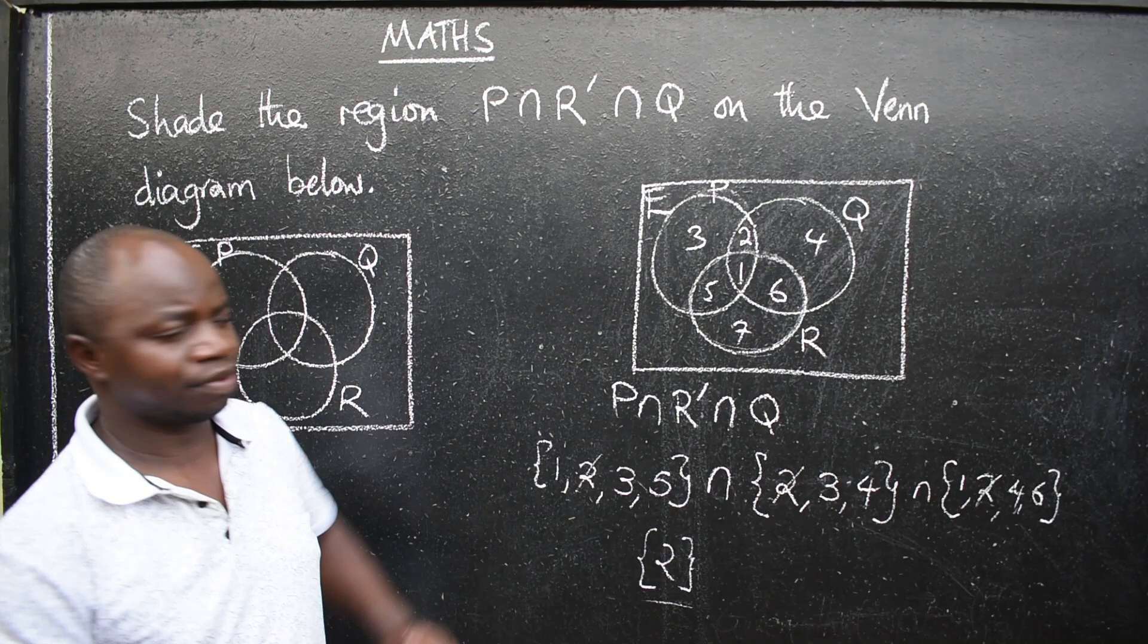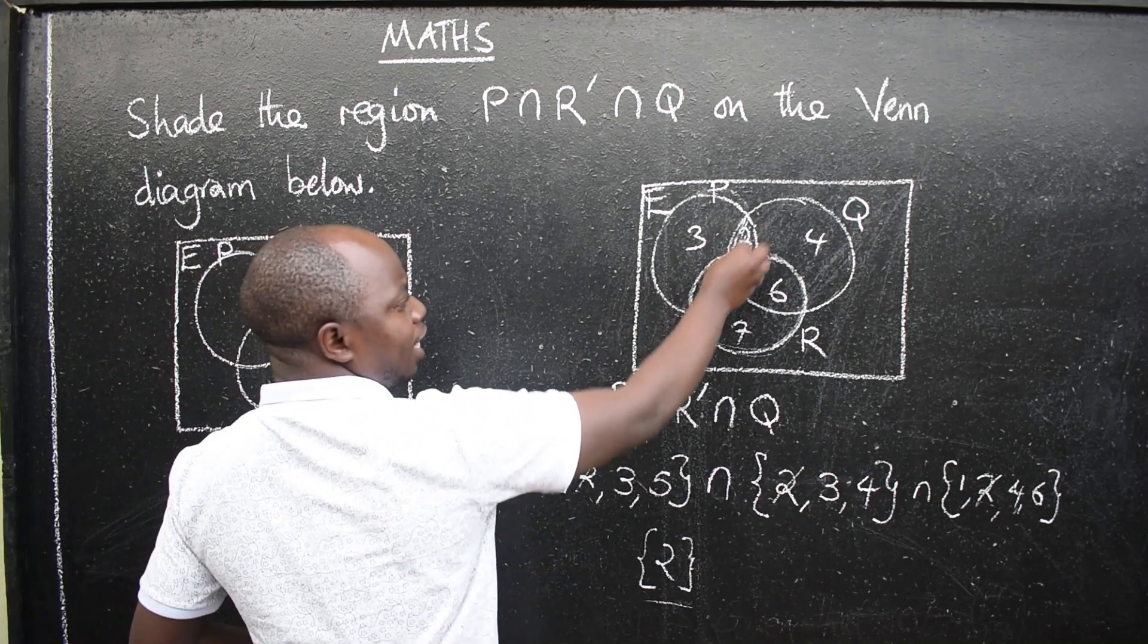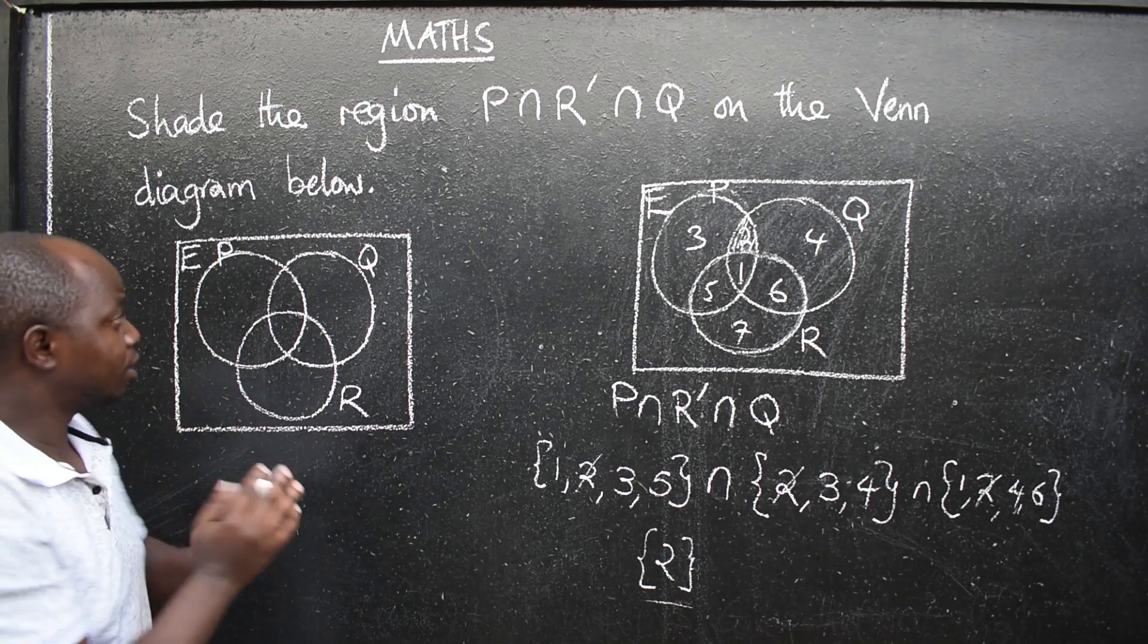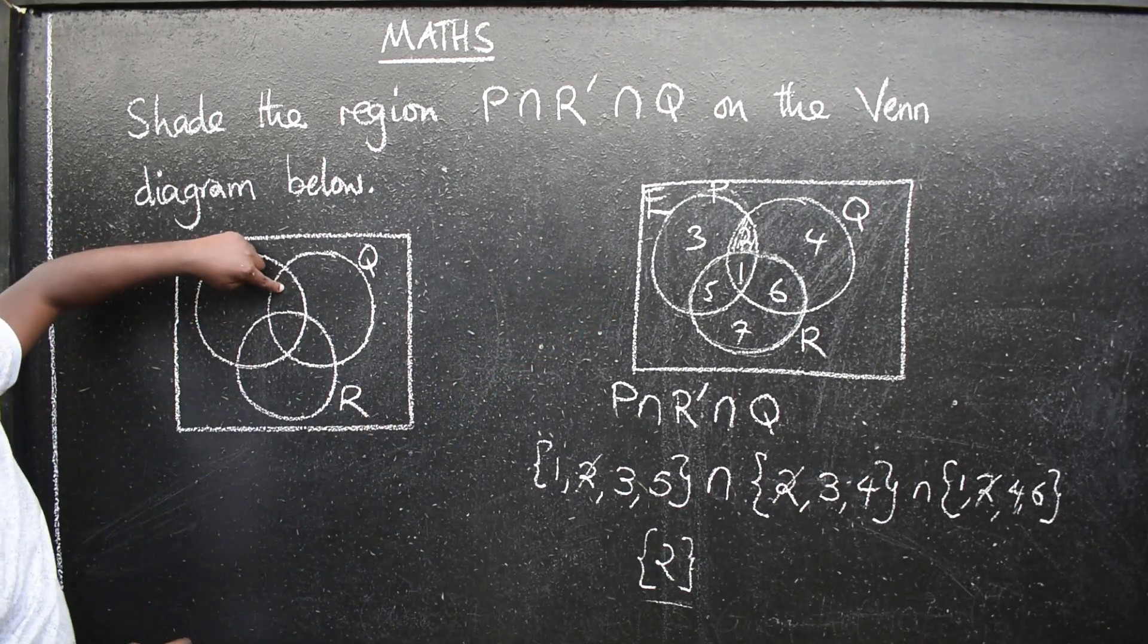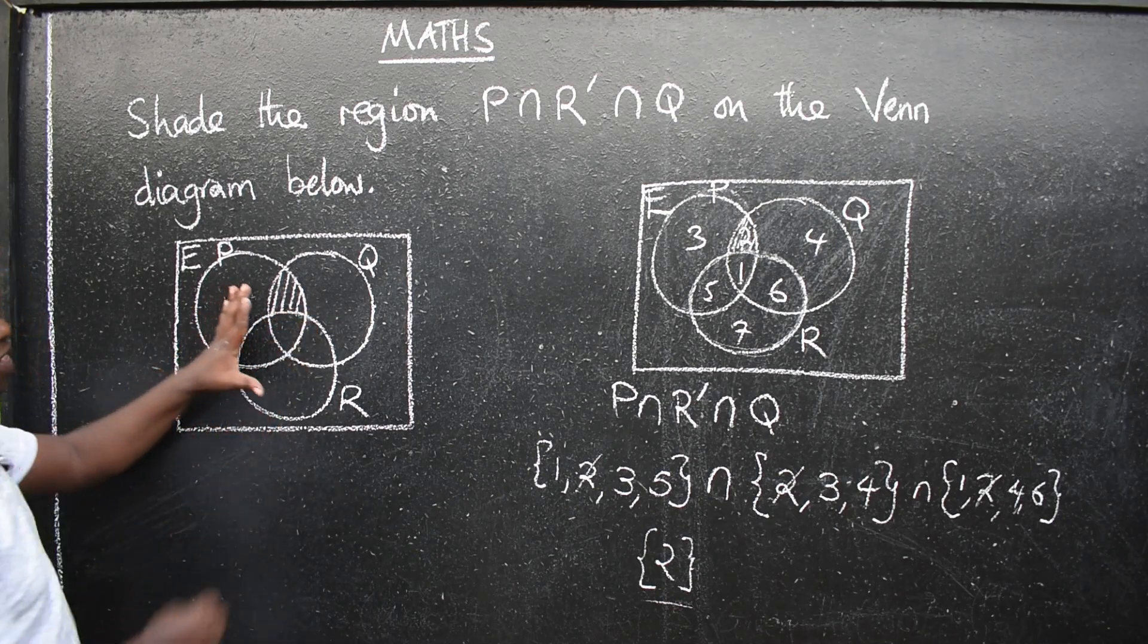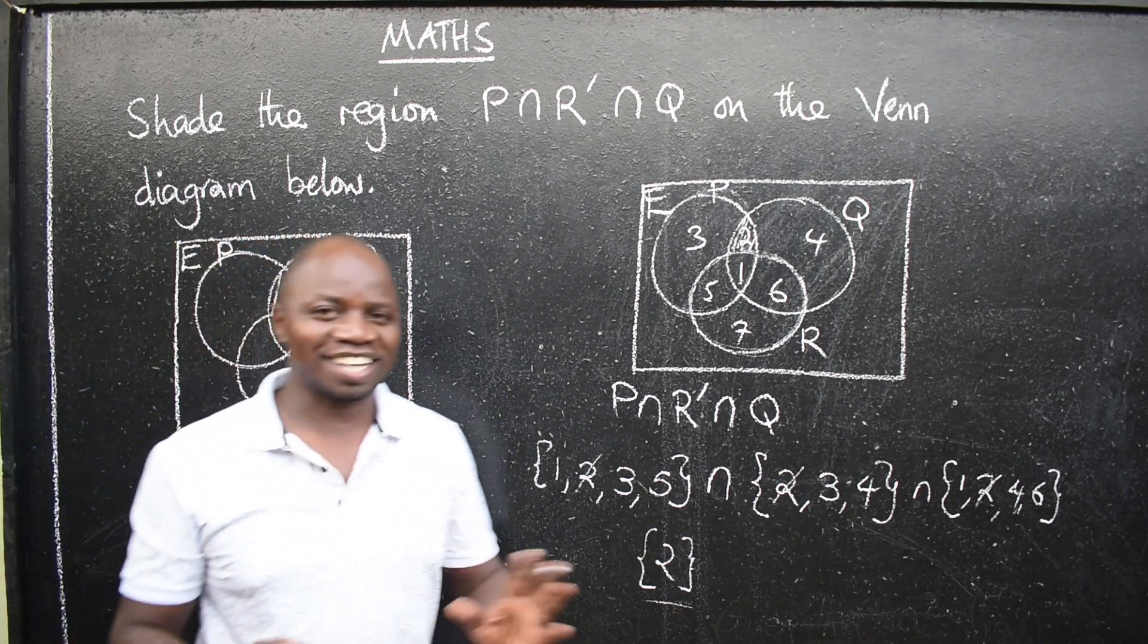Then you go back to the diagram. 2 is here. So you come to the original diagram now. Shade that region. 2, it means it is falling here. So you shade it like this. That is the correct answer.